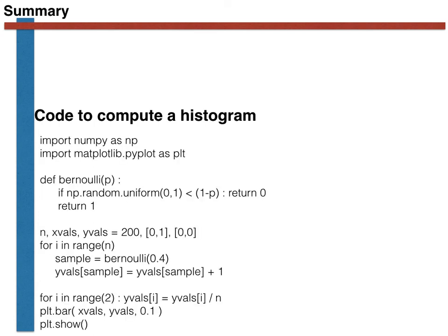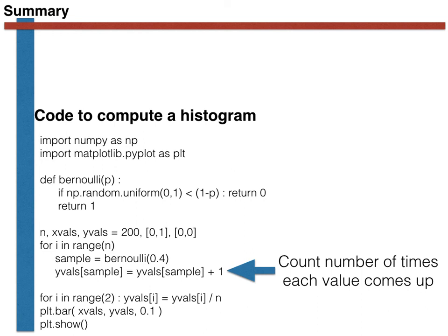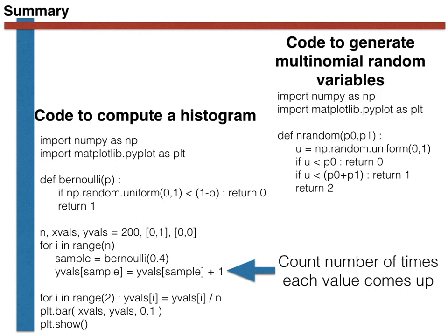This code on the left hand side is the part for computing the histogram. The key line here is this one, which counts how often the variable takes each of the various values in the sample space.